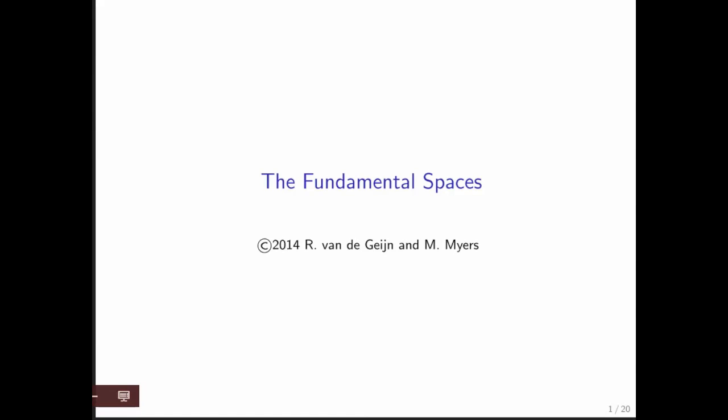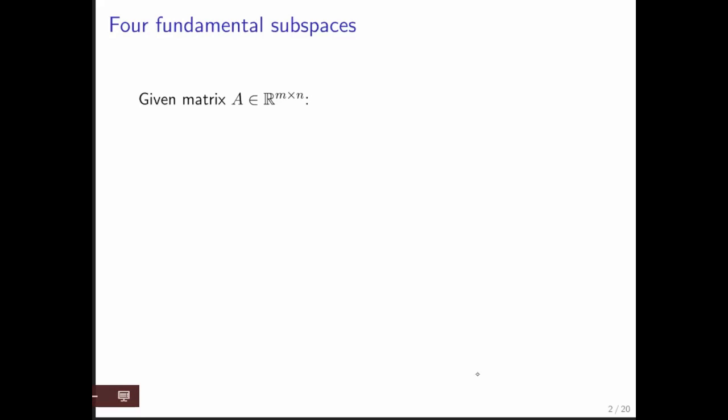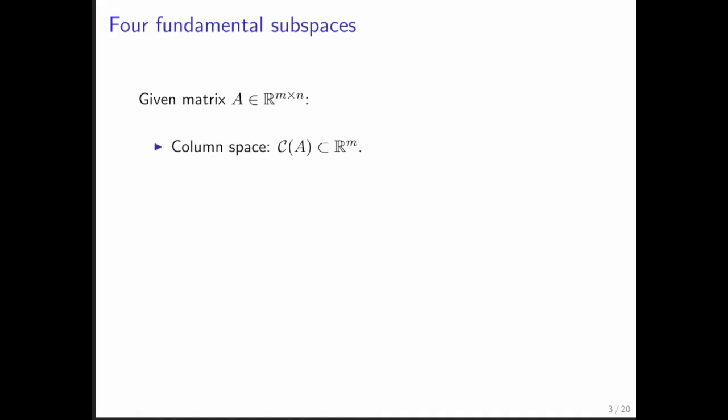We have arrived at one of the most important insights in linear algebra. When you have a matrix A that maps vectors from Rn to vectors of Rm, there are four fundamental spaces that are very important. Given a matrix A that is m by n, the first subspace is the column space, and the second one is the null space. You've seen both of those and why they are important.